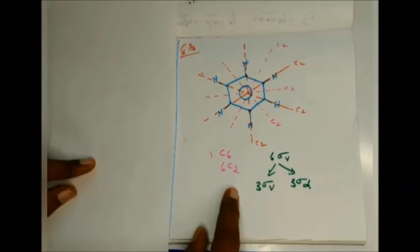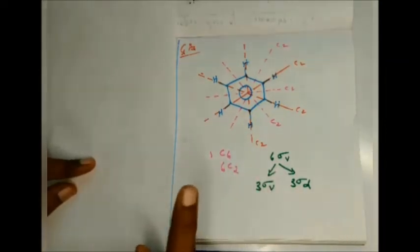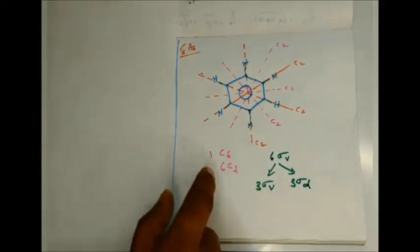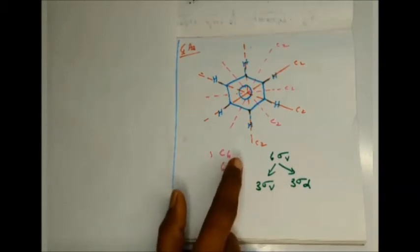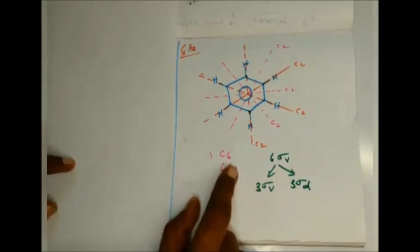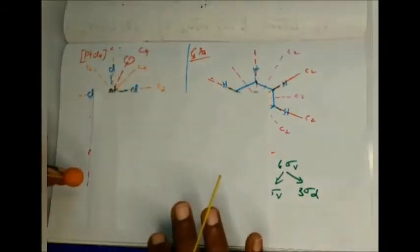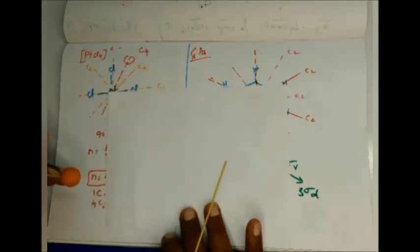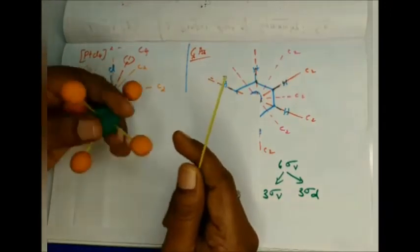For the benzene molecule, there are 3 sigma d planes. The right C2 axis is not the same as the dihedral plane — the dihedral plane is not the same as the C2 axis. That is why we need to distinguish the dihedral plane from the sigma v.